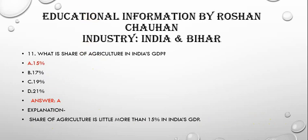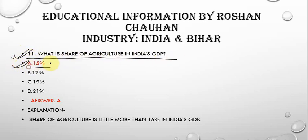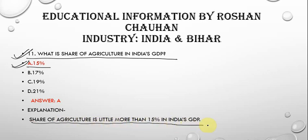The next question is: what is the share of agriculture in India's GDP? This is a very important question — remember it. The correct answer is 15%. India is a country of agriculture, and 70% of our population depends on agriculture. The share of agriculture is a little more than 15% in India's GDP.